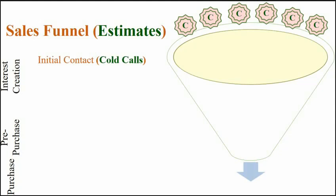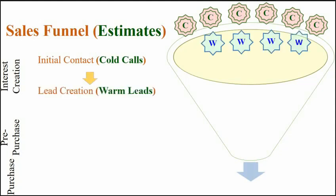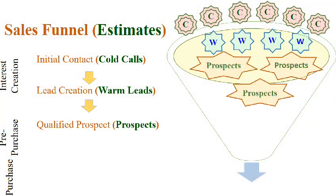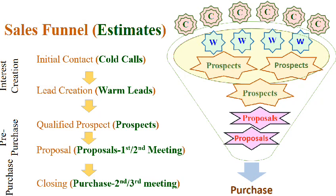The five estimates of different steps of the sales funnel include cold calls, warm leads, prospects, proposals, and purchase. The value of estimates reduces at every step, and due to this reduction in value, the sales process is also called a sales funnel. With this understanding, let's move on to discuss how to forecast sales using these five estimates.